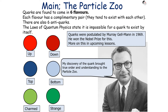Quarks come in six flavours. Each flavour has a complementary pair, and there are also six antiquarks. The laws of quantum physics state it is impossible for a quark to exist by itself. The six quarks are: the up and down quark, the top and bottom quark, and the charm and strange quark. Quarks were postulated by Murray Gell-Mann in 1969, and he won a Nobel Prize for this. The discovery of the quark brought order and understanding to the particle zoo.